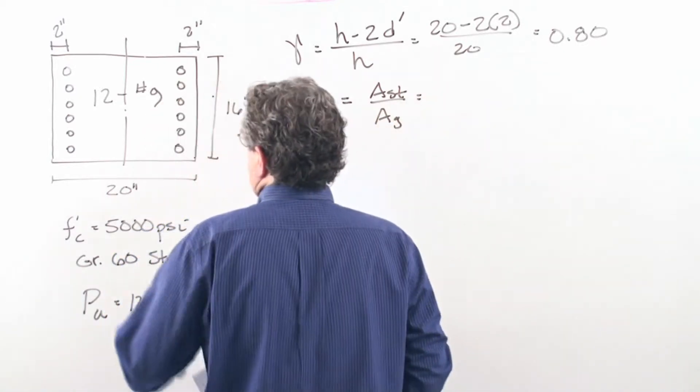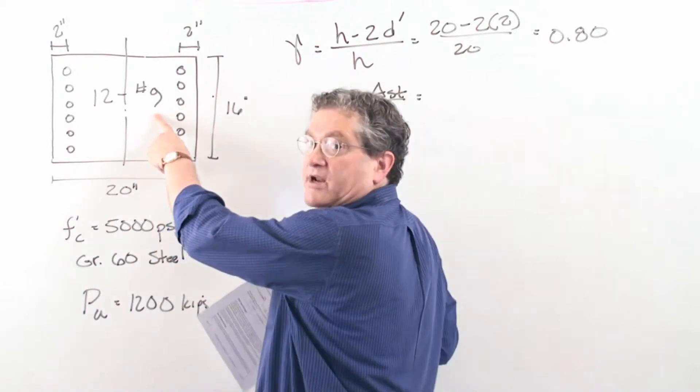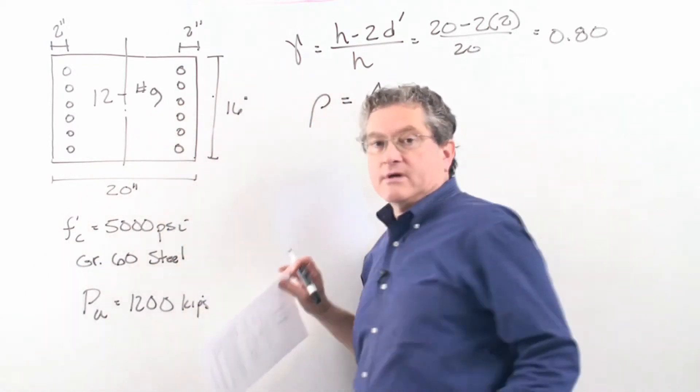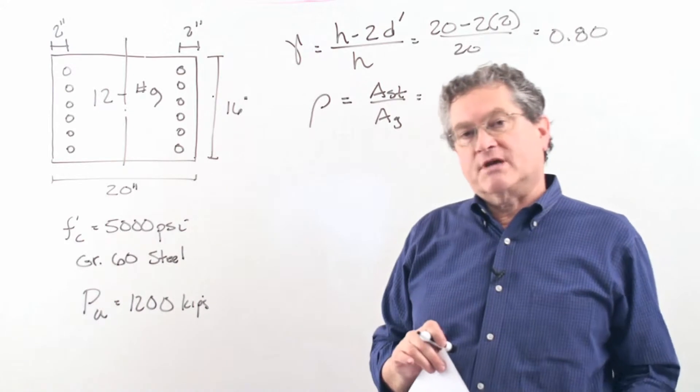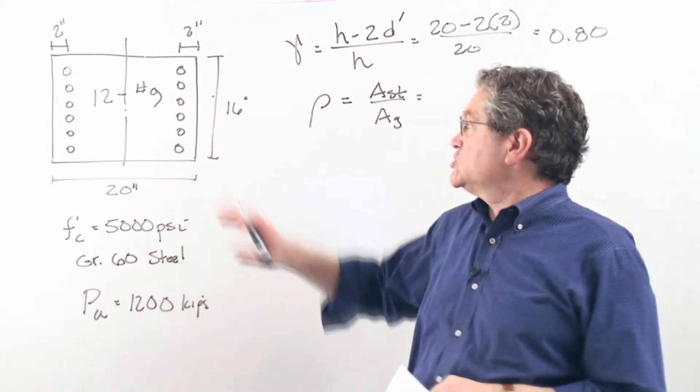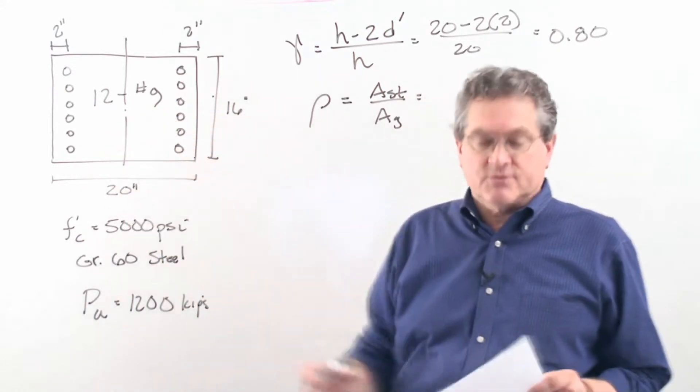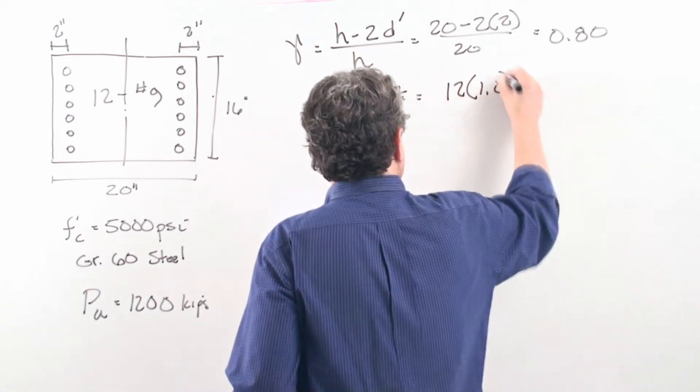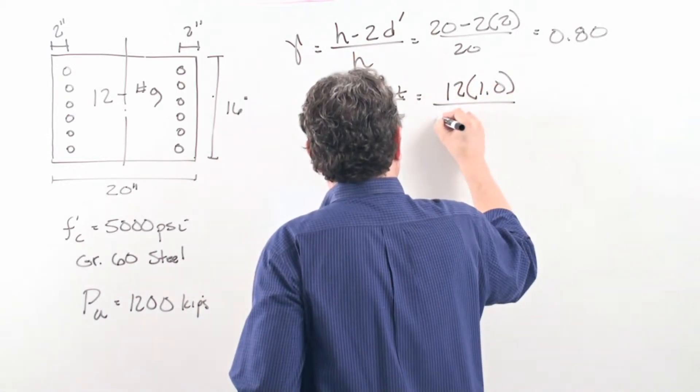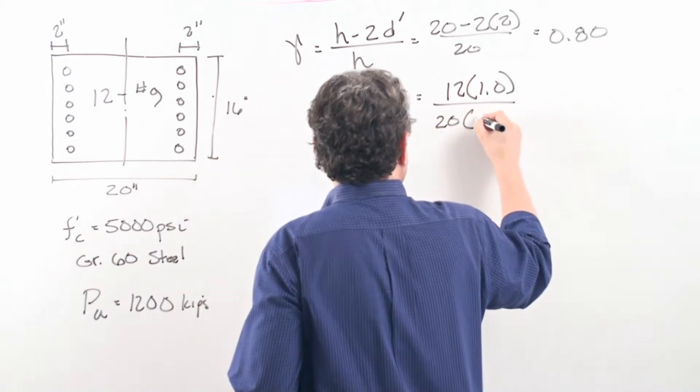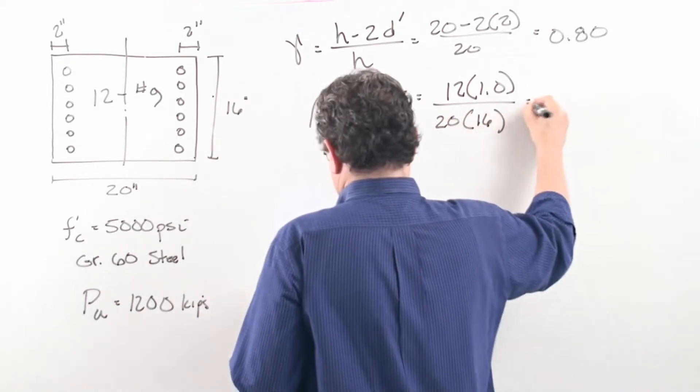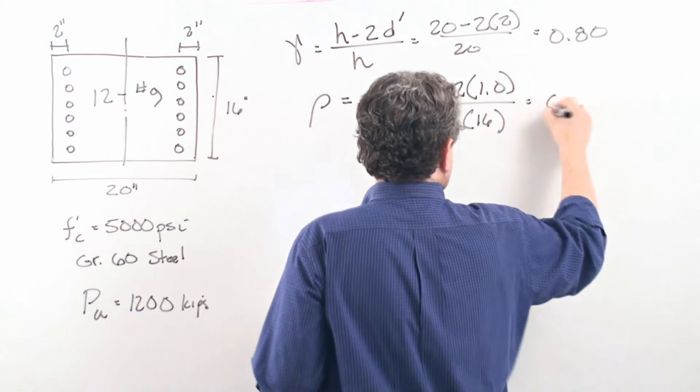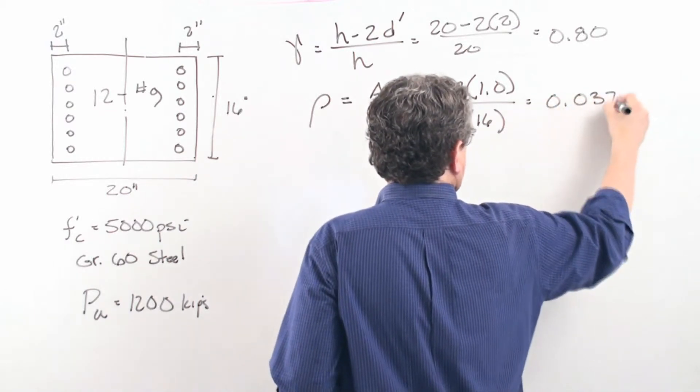So the area of the steel is, well we've got number 9 bars, and a number 9 bar should be easy to remember for its cross-sectional area because it's one square inch, and so we've got 12 of them, so we've got 12 square inches. So we can say 12 times the 1, and then divide through by the cross-sectional area, and that comes out to be 0.0375.